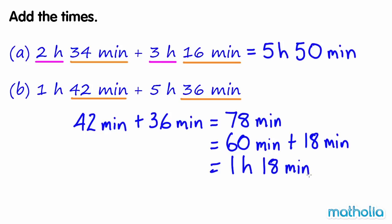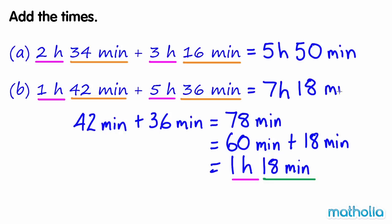Now we can add the hours: 1 hour plus 5 hours plus 1 hour equals 7 hours. So 1 hour 42 minutes plus 5 hours 36 minutes equals 7 hours 18 minutes.